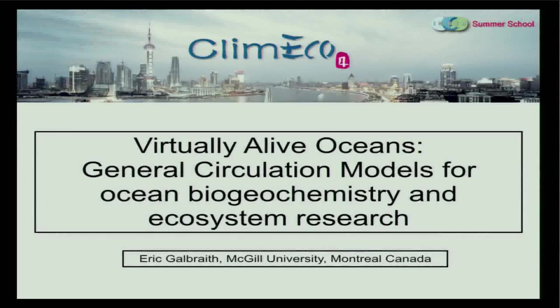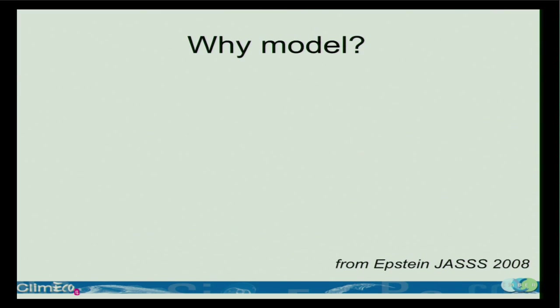So I'm going to focus on a particular kind of model. Yes, absolutely, there are all kinds of models, from very simple conceptual models to these very complex Earth system models. I'm going to follow on and talk about the general circulation models that have become a really important part of humans' thoughts about the future and how the Earth is going to change as CO2 levels continue to increase. But first, I'd like to say a few of the reasons why it's important and useful to come up with models.